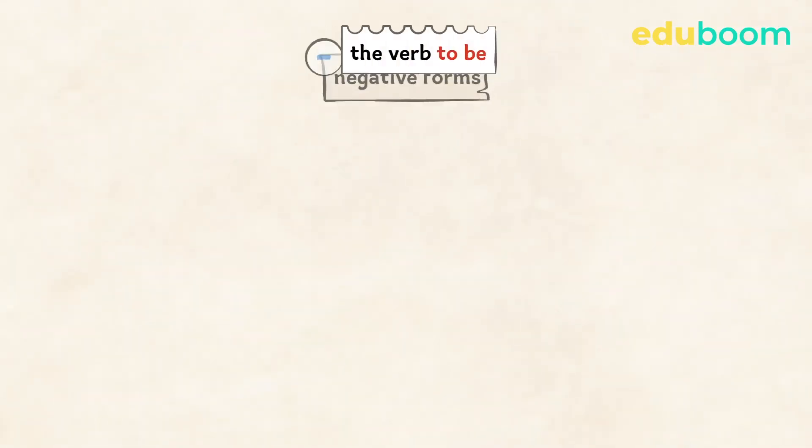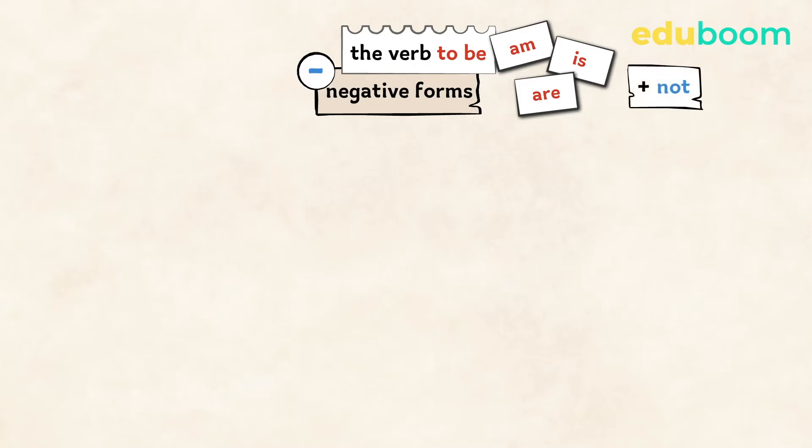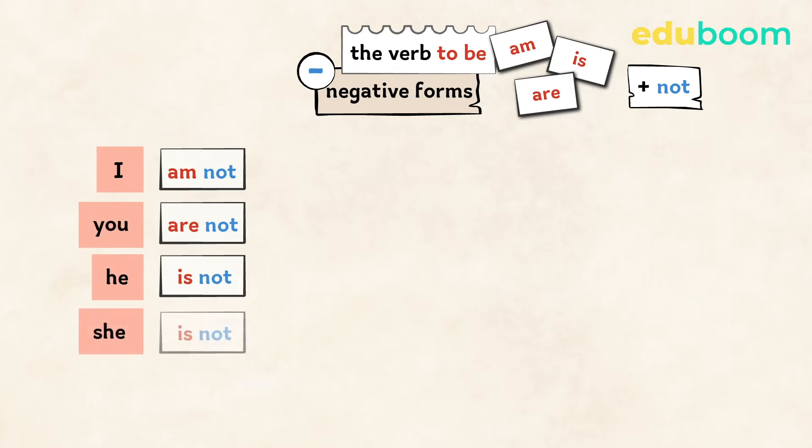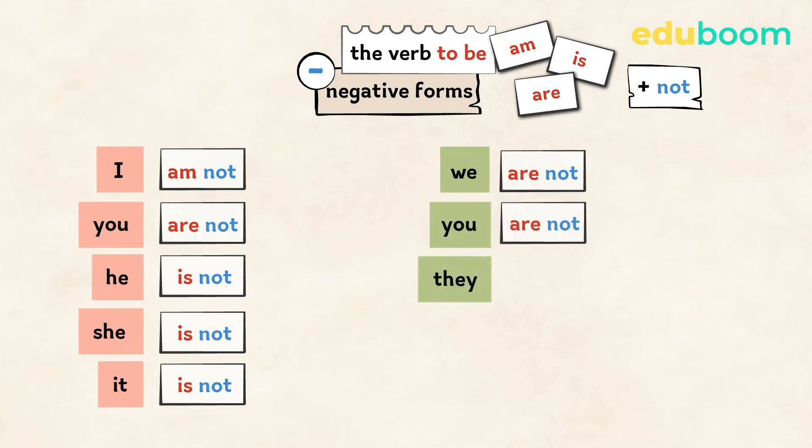Now let's see the negative forms. You only need to add the word not. So you say: I am not, you are not, he is not, she is not, it is not, we are not, you are not, they are not.